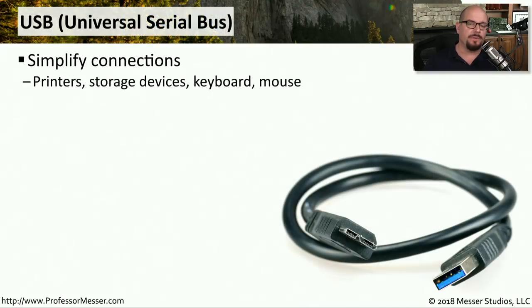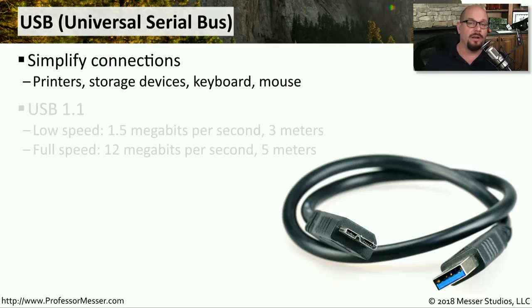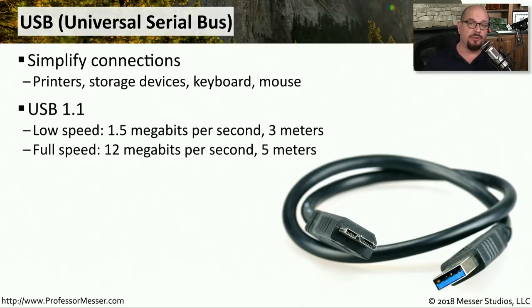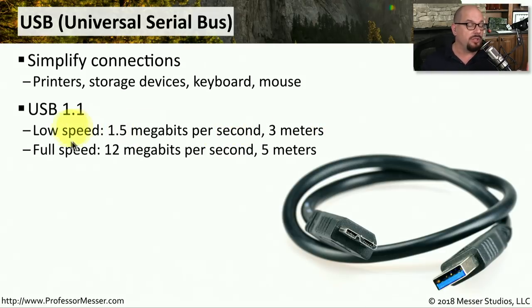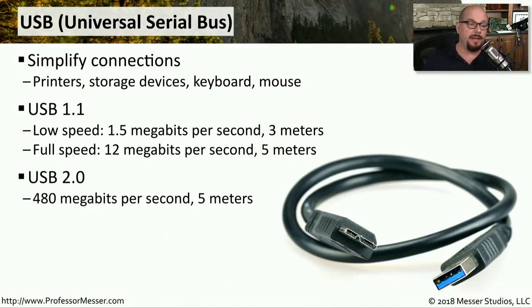USB is the universal serial bus and has become one of the most popular connectors on our devices. It's able to connect printers, keyboards, storage devices, and much more. USB 1.1 was one of the first versions of USB. There were two different speeds available: the low speed, which allowed 1.5 megabits per second over a maximum cable length of 3 meters, and full speed USB, which transmitted at 12 megabits per second with a cable length of about 5 meters. USB 2.0 was a jump in speed up to 480 megabits per second, and again the maximum cable length was somewhere around 5 meters.